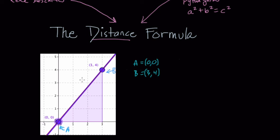So we want to know how far apart these two points are. Don't confuse that with slope — slope tells you the rate of change. It would tell you this vertical distance of four and this horizontal distance of three, so the slope would be four over three, change in y over change in x. But that's not distance. If you're standing at point A and want to get to point B, you're not going to walk over and up — you're going to walk on a straight line, and that's what we're trying to find.